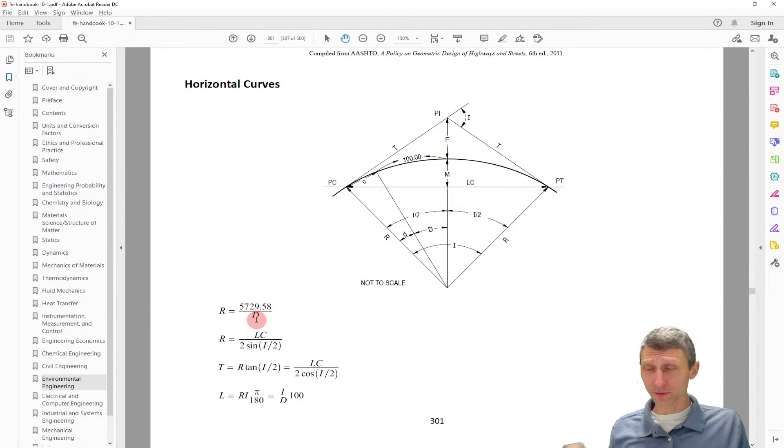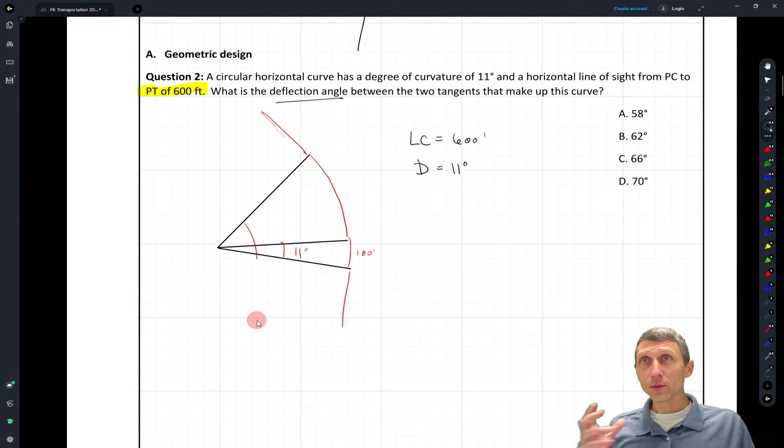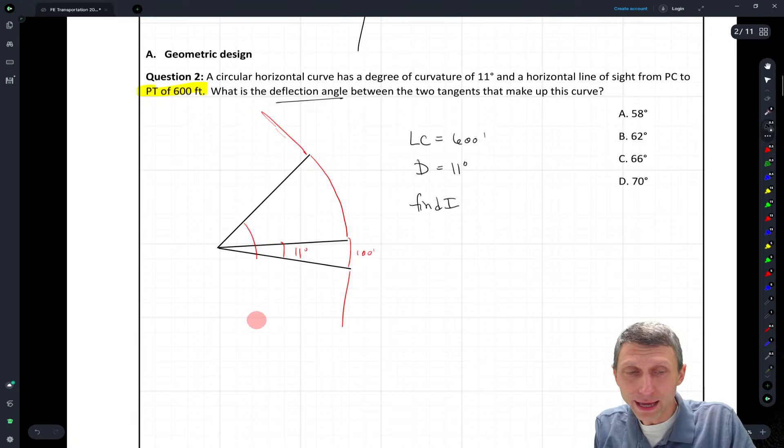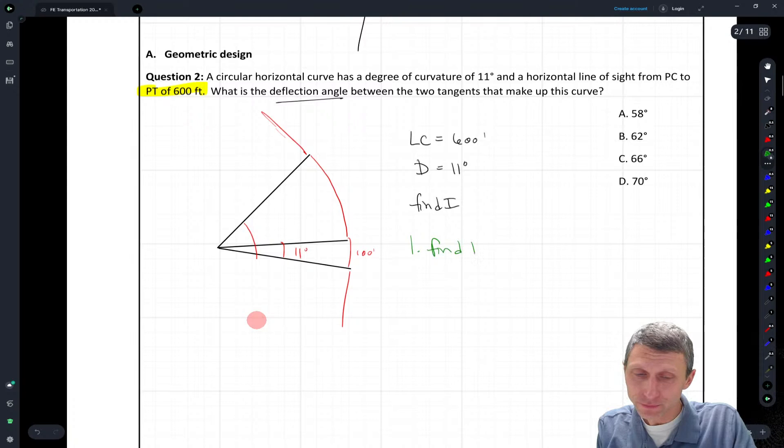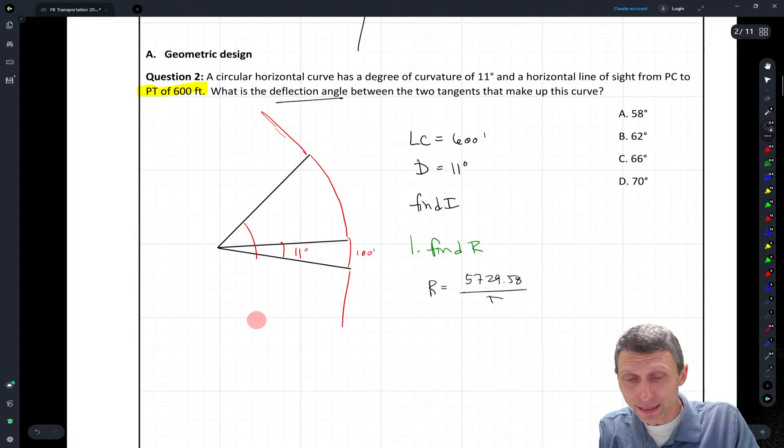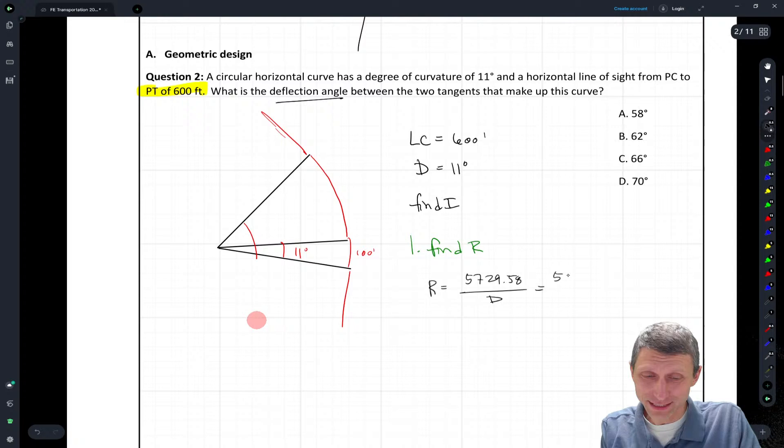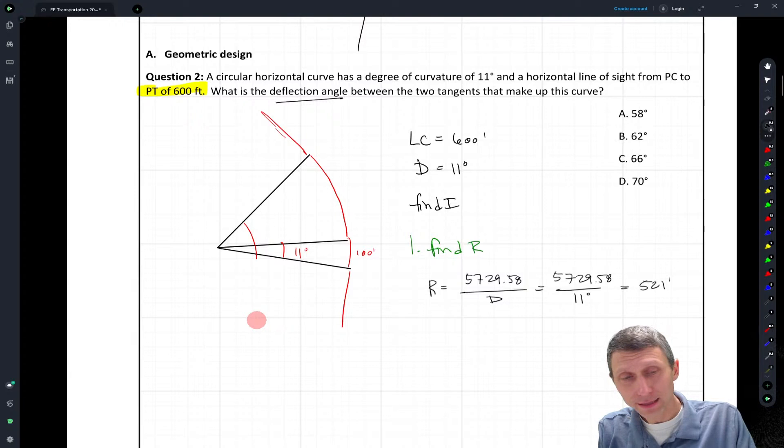So we have to find I, but first before that, let's first find the radius. We're going to use that radius formula, so the radius equals 5729.58 divided by D. That's the formula, and this is a conversion. We could go and derive it, but you don't need to. So let's just do this out, divided by our 11 degrees is going to give us 521 feet.